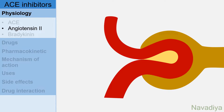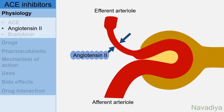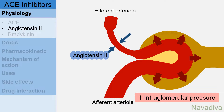There is also an effect of angiotensin 2 on renal vasculature. This is the renal corpuscle, with its afferent arteriole and efferent arteriole. Angiotensin causes constriction of the efferent arteriole, which increases intraglomerular pressure. We will see the importance of this effect with relevant points later in this video.